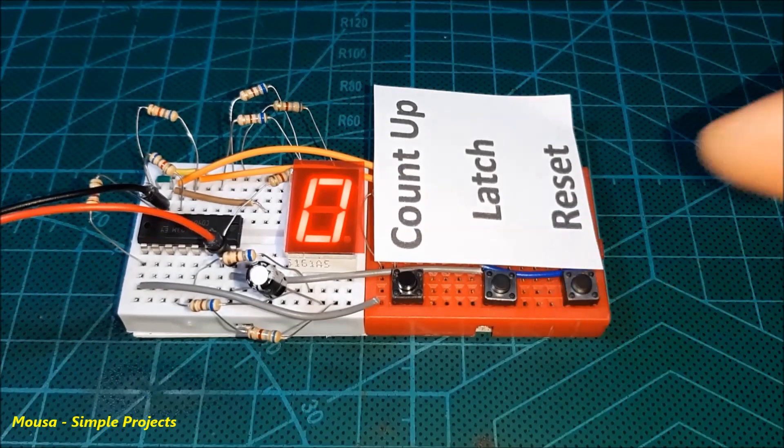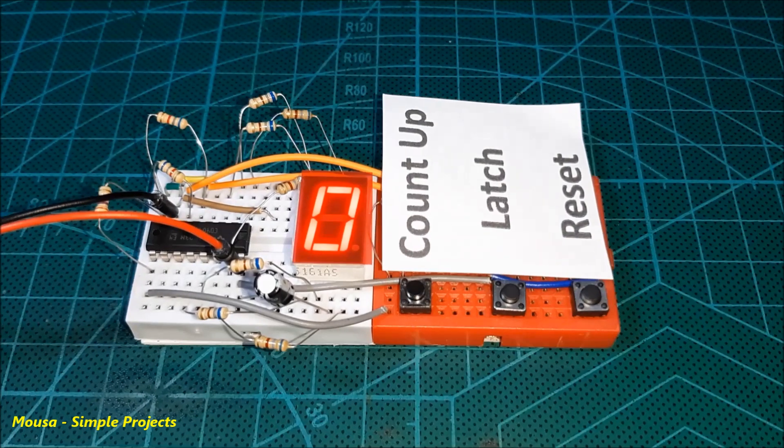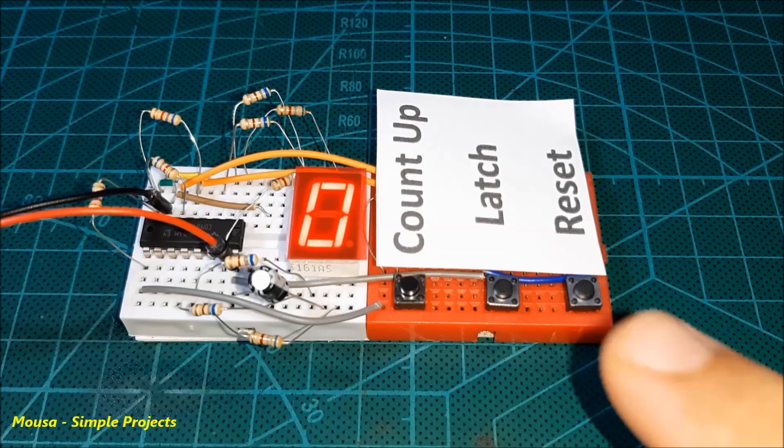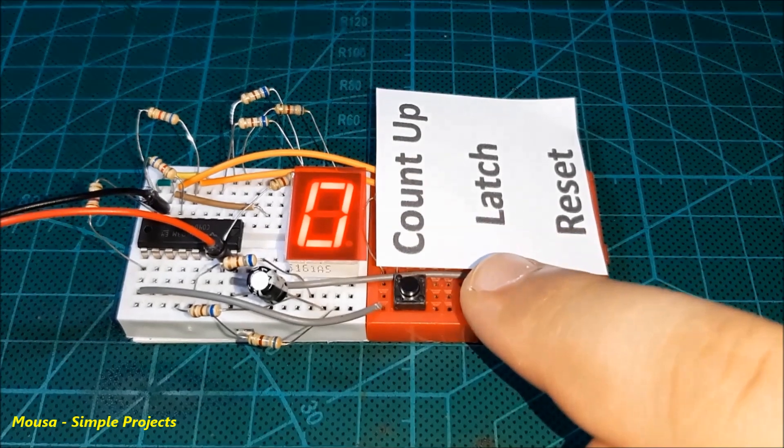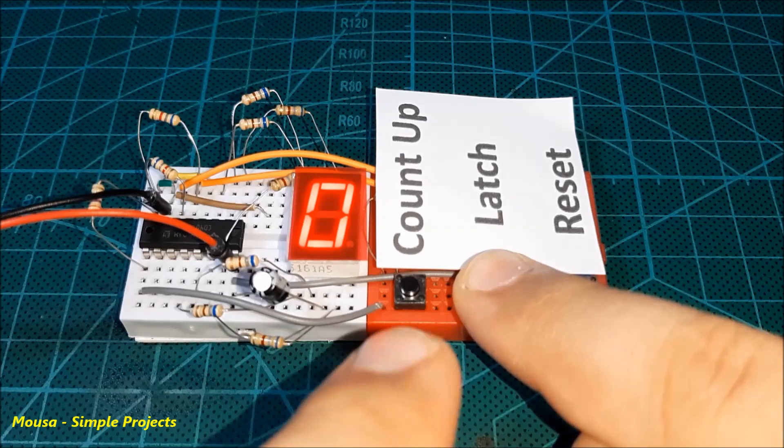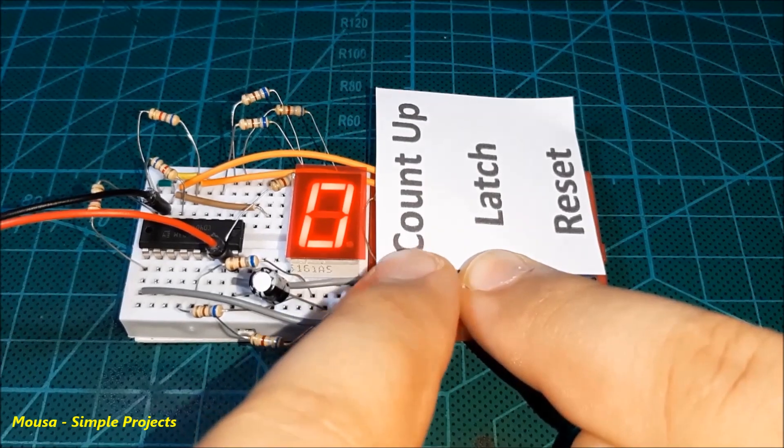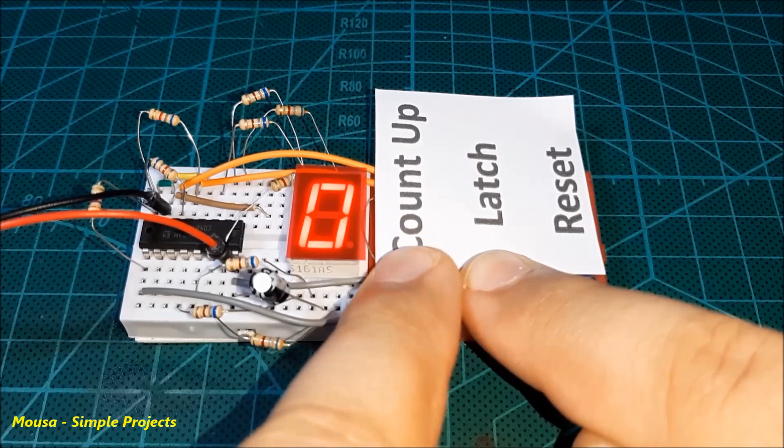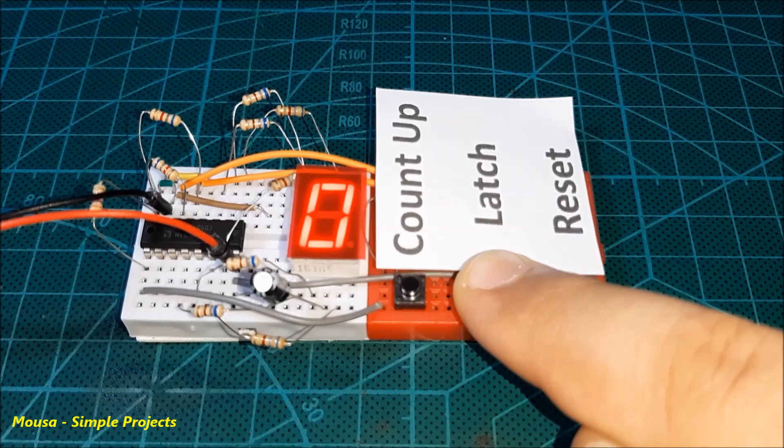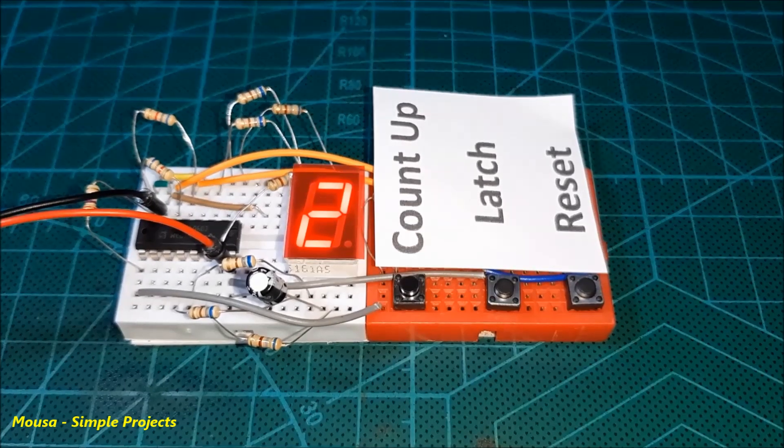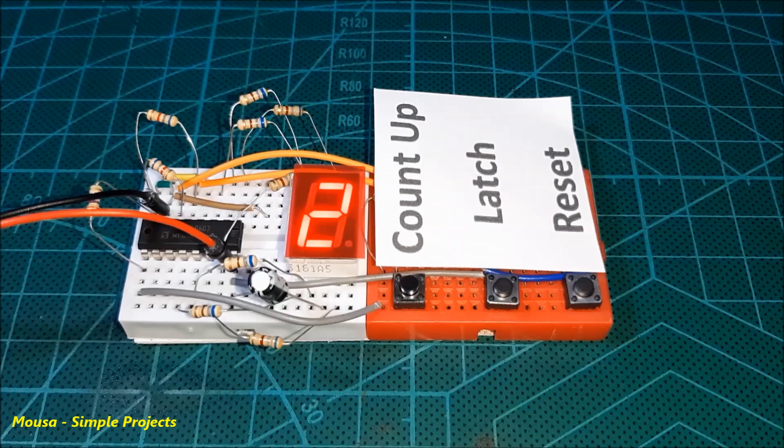But what is the latch function? The latch button is connected to pin number six. When you push and hold this push button, the seven segment display freezes. So by pushing the count up button, the IC counts up but the number on the display didn't change as long as I press the latch button. But when I release the latch button, the counted number appears on the display.